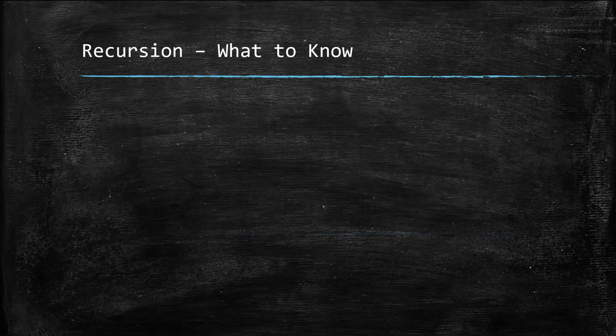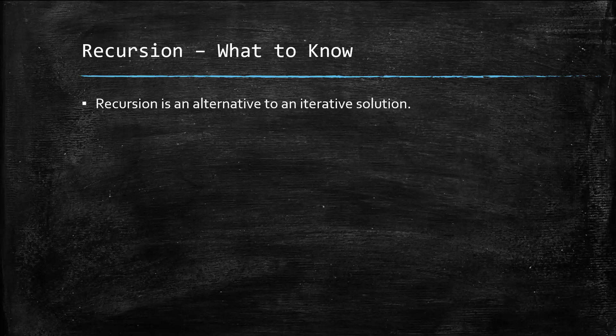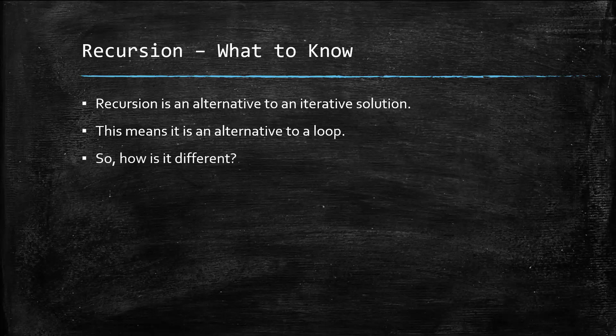What do you need to know about recursion before you can start understanding it? Recursion is an alternative to an iterative solution — a fancy way of saying it's an alternative to a loop: a pre, post, or count-controlled loop.